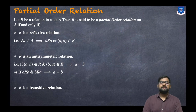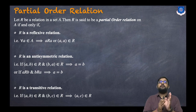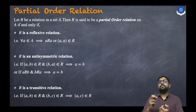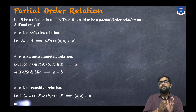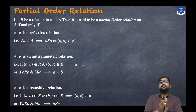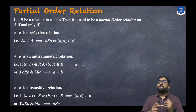The third condition is R has to be a transitive relation. For transitivity, if (A, B) belongs to R and (B, C) belongs to R, then (A, C) has to belong to R. In other words, if A is related to B and B is related to C, then A and C have to be related.